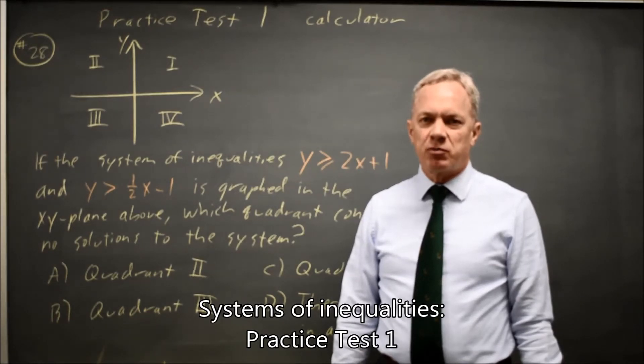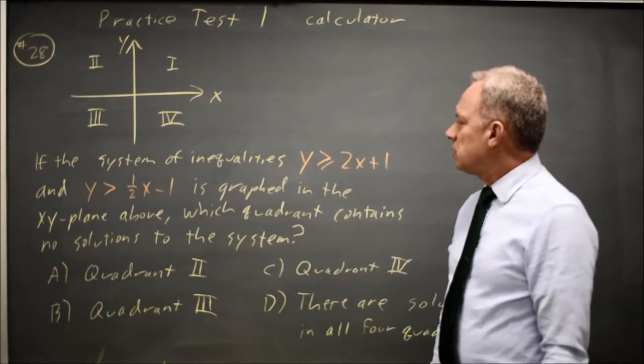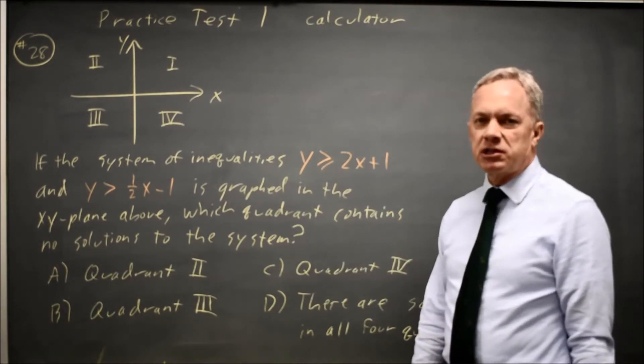This is calculator question number 28 from Practice Test 1. College Board gives us a system of inequalities and asks which quadrant contains no solution to the system.